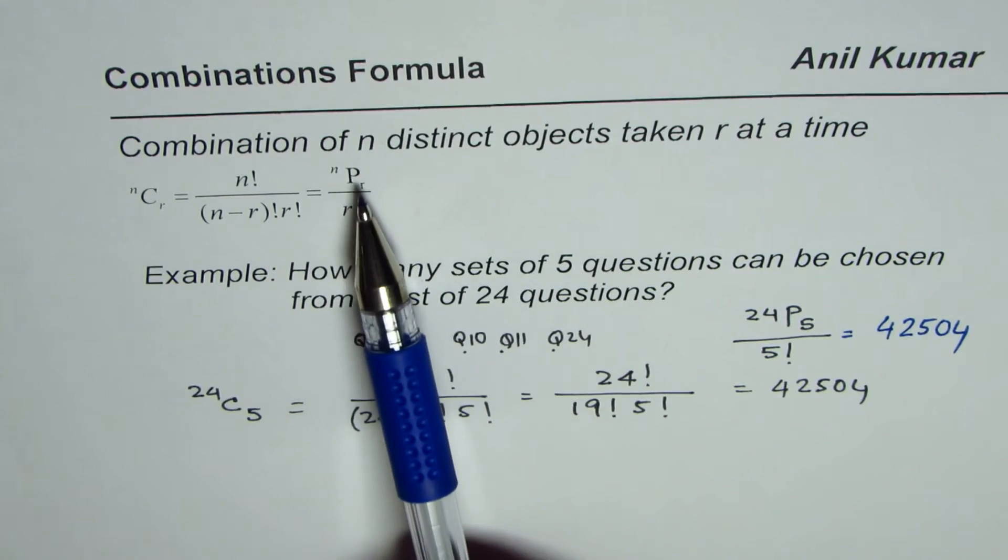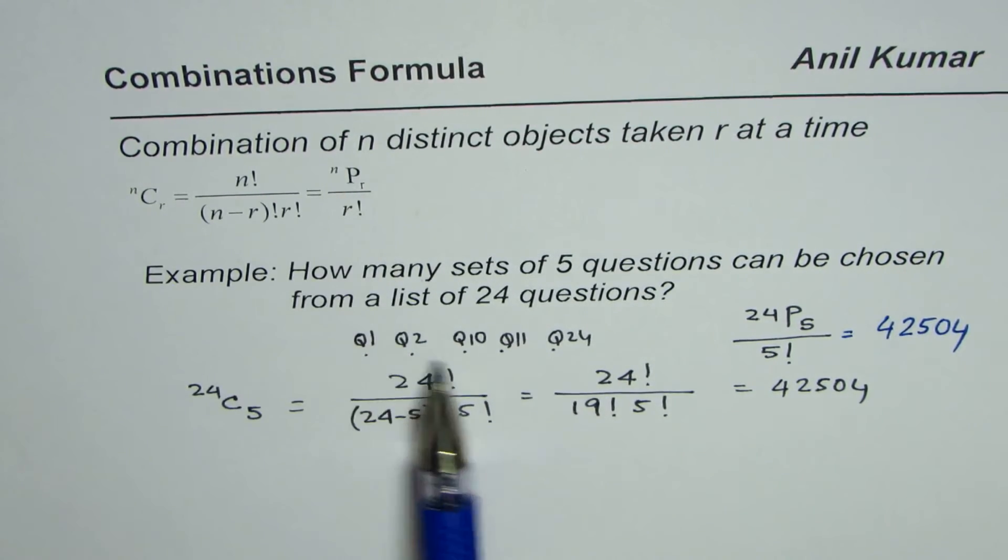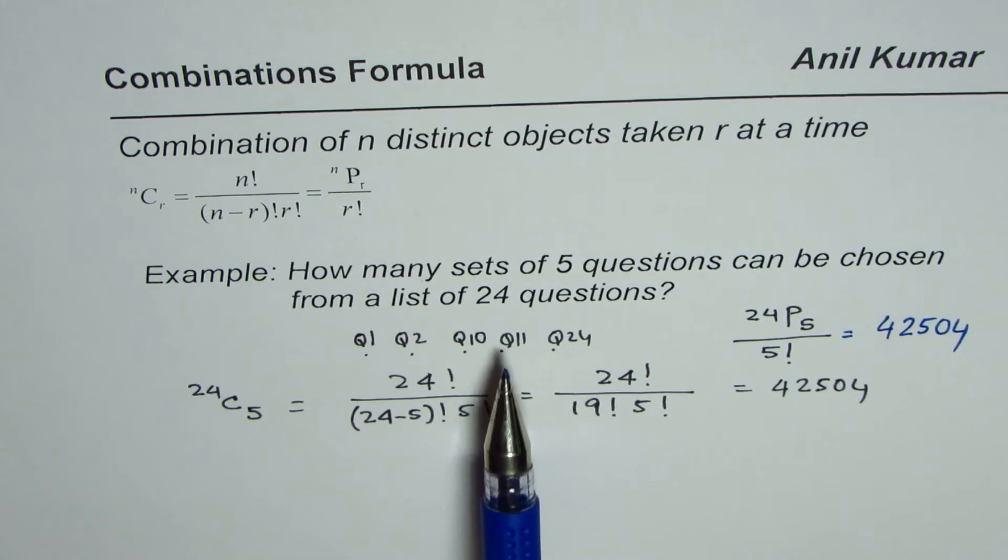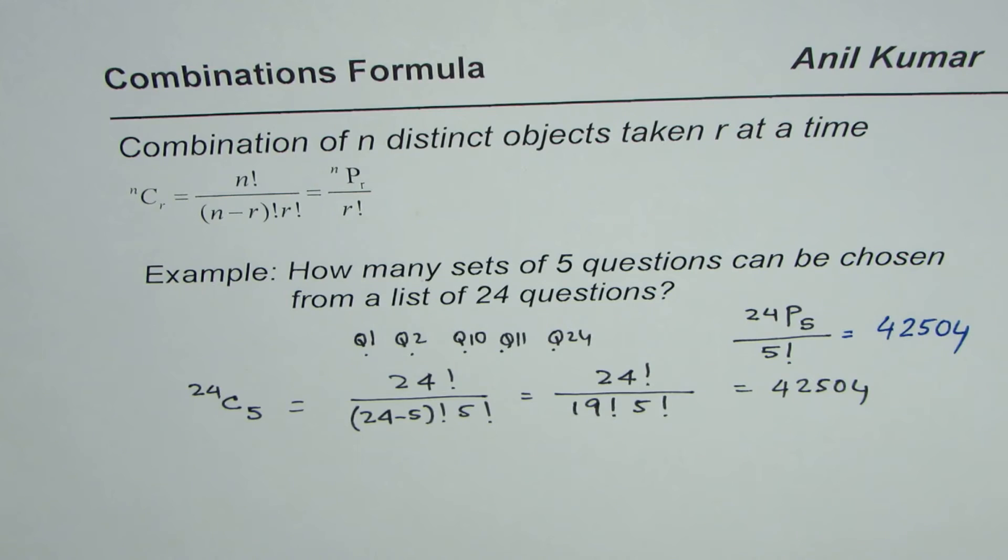It is important to remember that in permutations, order is important, and in combinations, order is not important. Therefore we divide by those number of permutations—5 factorial for 5 places. That is how we should understand this topic.